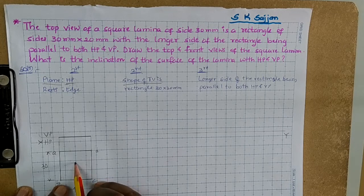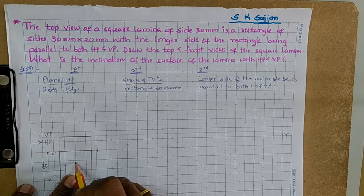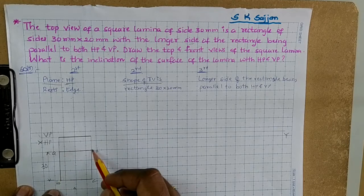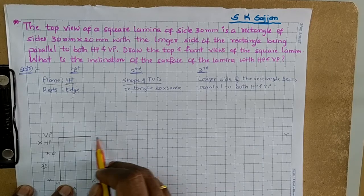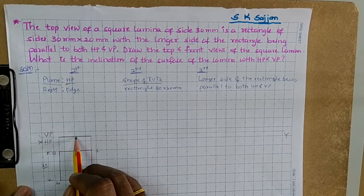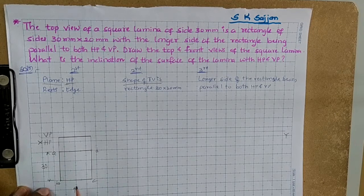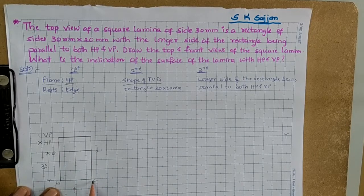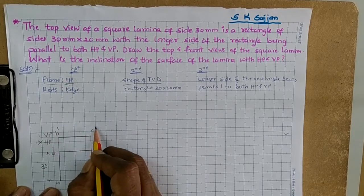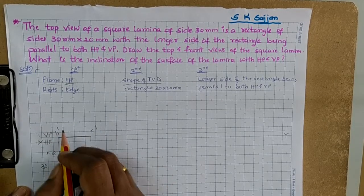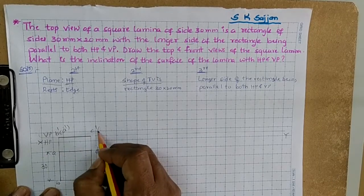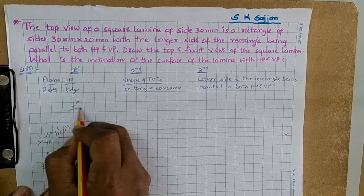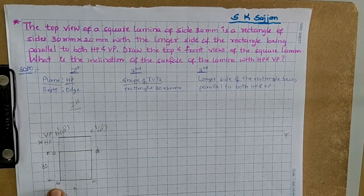Construct the square and with its help draw the front view. Project all the points of the top view upward to the X-Y line. By joining these projections, we get the front view on the X-Y line. Observing the visible points: B and C are visible — marked as B' and C'. A coincides with B (written as A' in bracket), and D coincides with C (written as D' in bracket). This is the first portion — the first set of front and top views.